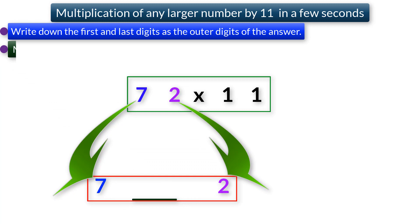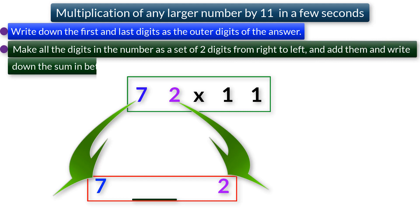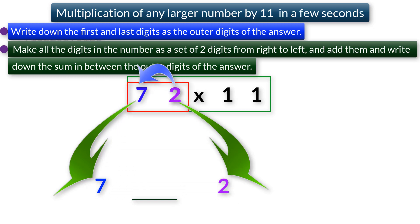Step 2: Make all digits in the number as a set of two digits from right to left and add them, then write down the sum in between the outer digits of the answer. So, add the digits 7 and 2 together, you will get 9. Now, write down this 9 in between the digits 7 and 2.